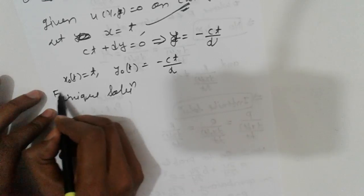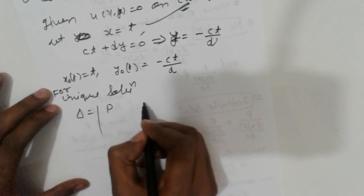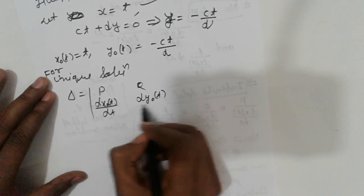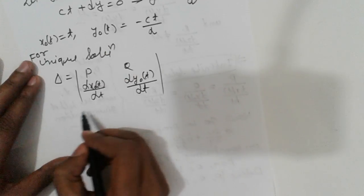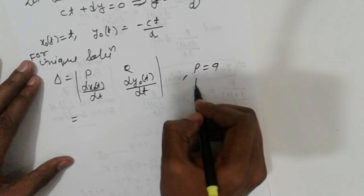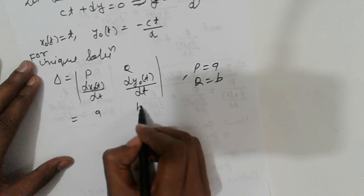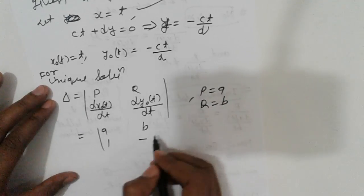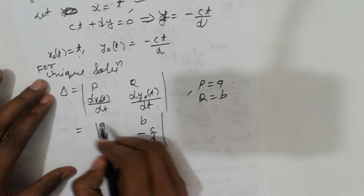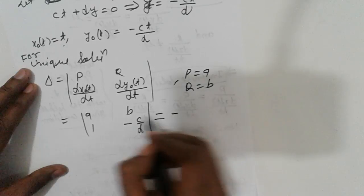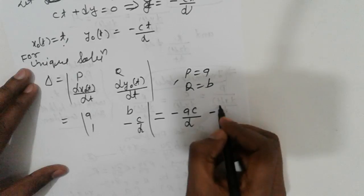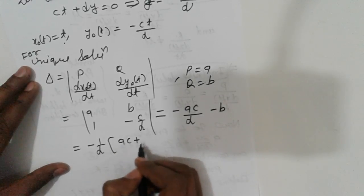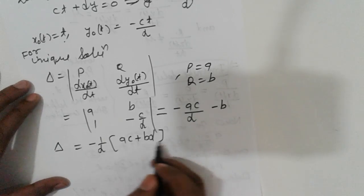The uniqueness condition is delta = determinant of [p, q; dx₀/dt, dy₀/dt]. Substituting p = a, q = b, dx₀/dt = 1, and dy₀/dt = minus c/d, we get delta = a times 1 minus b times (minus c/d), which simplifies to: taking minus 1/d as common factor, we get delta = minus (1/d) times (ac + bd).